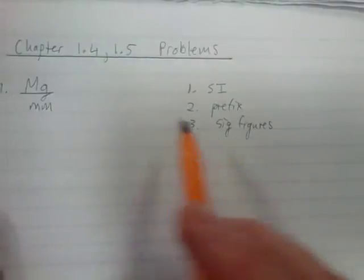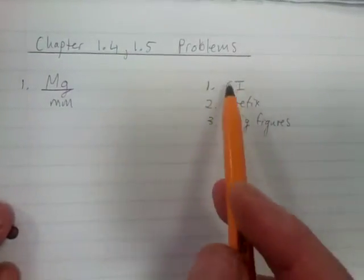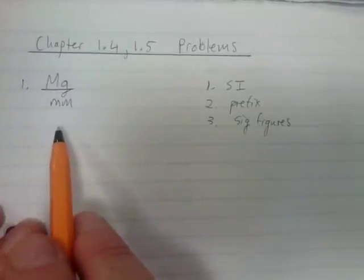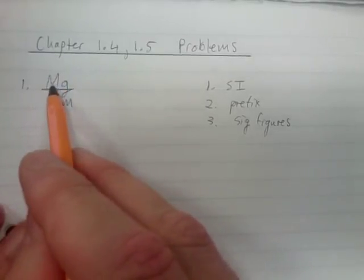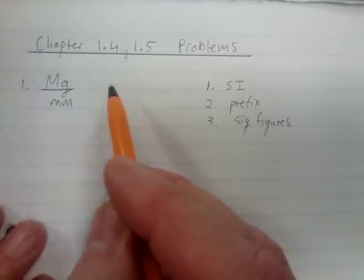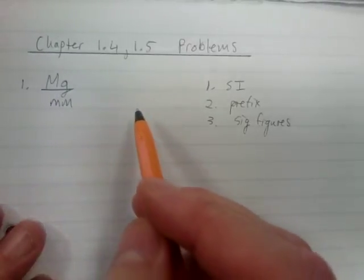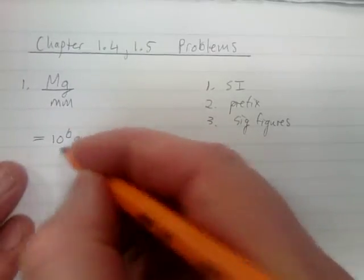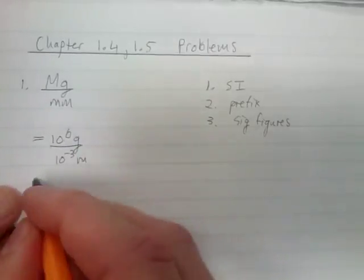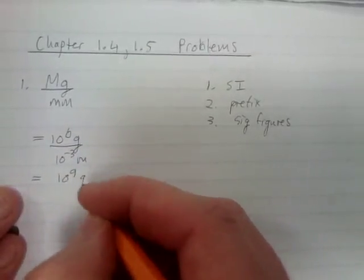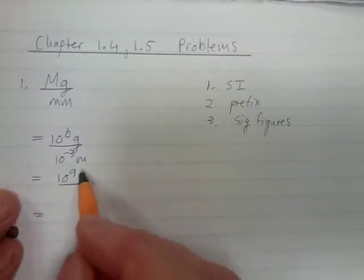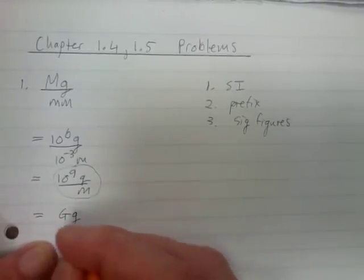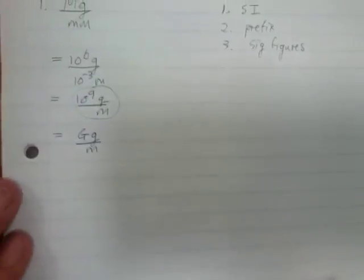How do we put it into SI units with an appropriate prefix and significant figures? First, we convert to exponential form. Megagram is 10 to the 6 grams, and millimeter is 10 to the minus 3 meters. So we get 10 to the 6 grams over 10 to the minus 3 meters, which gives 10 to the 9 grams per meter. In prefix form, that becomes gigagram per meter.